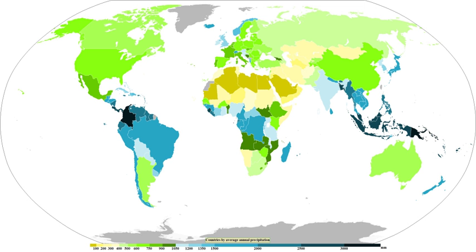Smaller drops are called cloud droplets, and their shape is spherical. As a raindrop increases in size, its shape becomes more oblate, with its largest cross-section facing the oncoming airflow. Contrary to cartoon pictures of raindrops, their shape does not resemble a teardrop. Intensity and duration of rainfall are usually inversely related — high-intensity storms are likely to be of short duration while low-intensity storms can have a long duration. The METAR code for rain is RA, while the code for rain showers is SHRA.